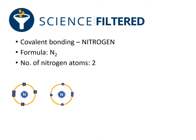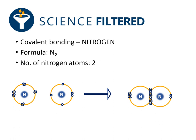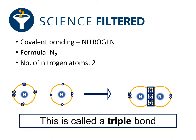A lonely electron must buddy up to make a shared pair of electrons. I've got one, two, and three lonely electrons. They're going to buddy up, which means I'm going to have a molecule of nitrogen that looks like this. I've got one, two, three shared pairs of electrons, and this is called a triple bond.